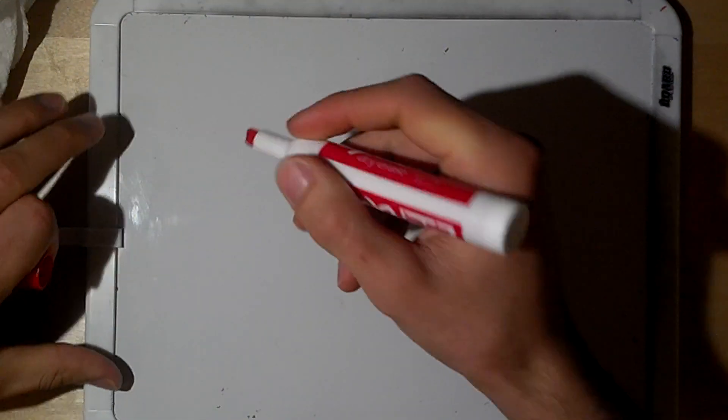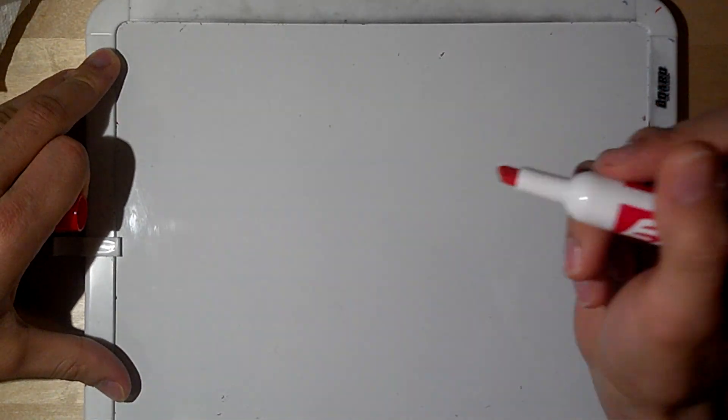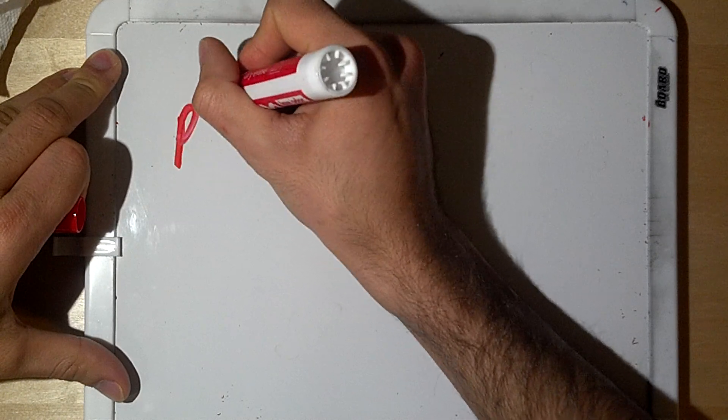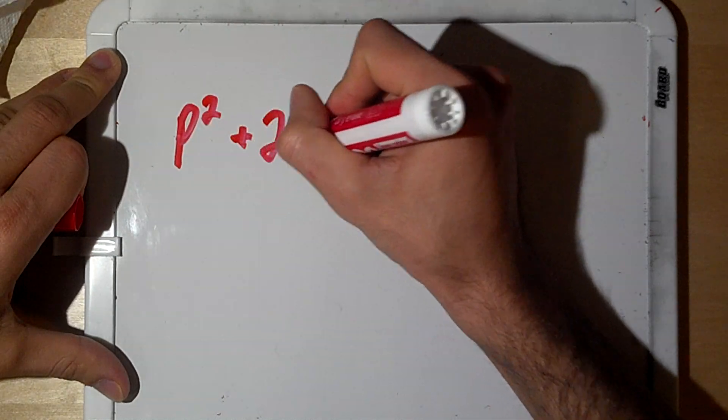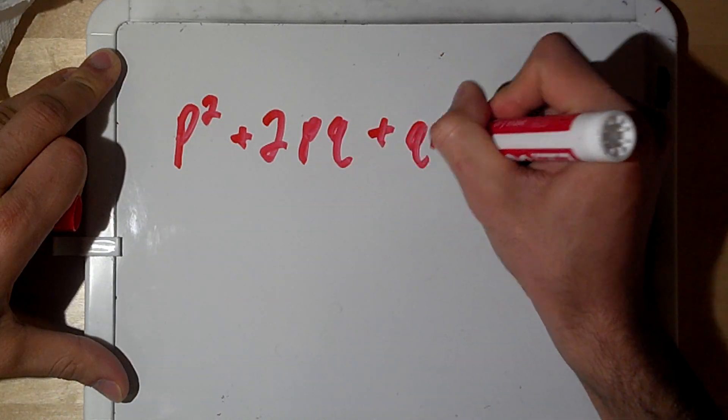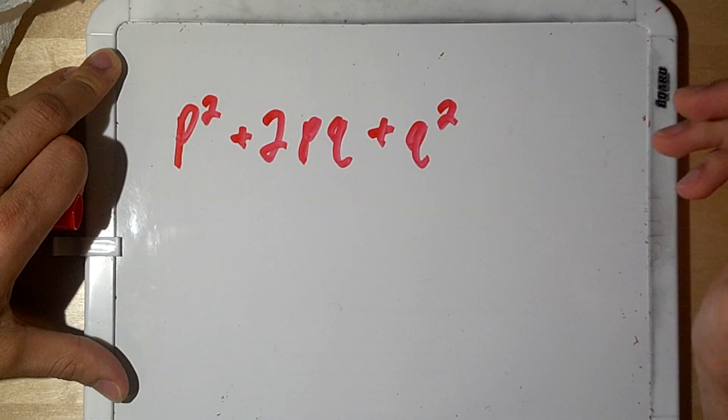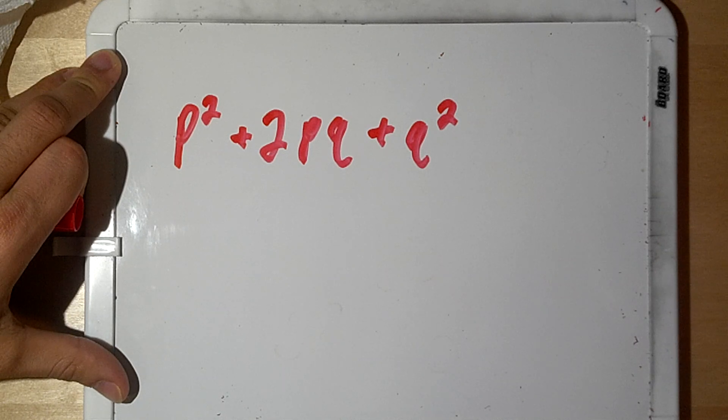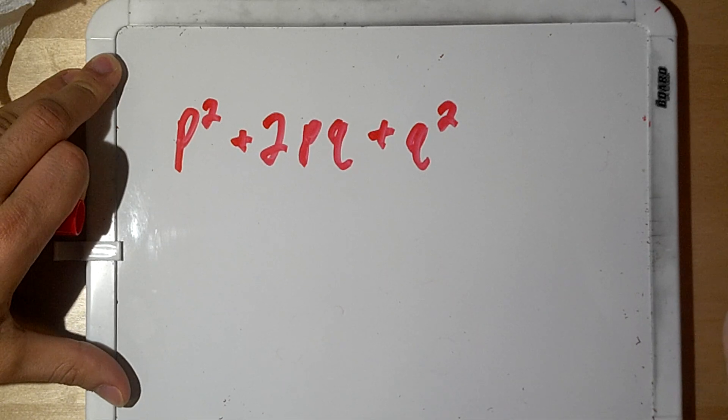Alright, so the Hardy-Weinberg Equation is going to be p² + 2pq + q². Now, don't let this equation freak you out, for those of you that are not really into math, this is very simple.